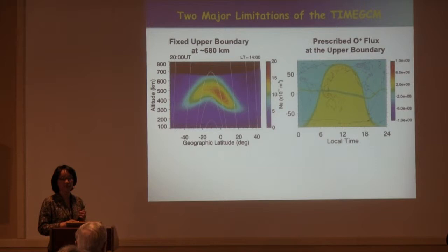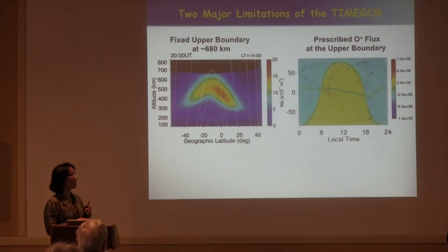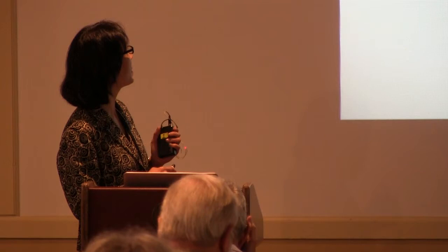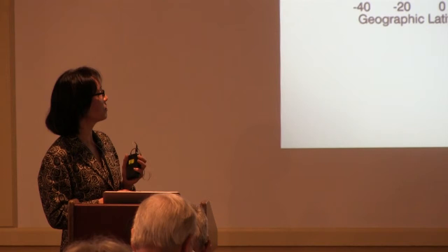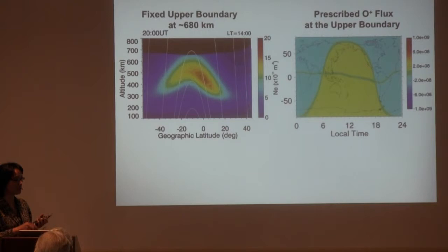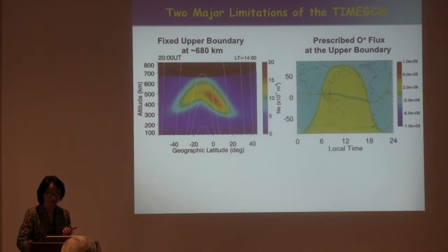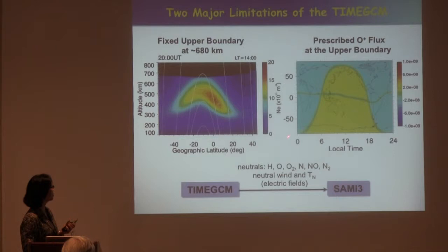Although TIEGCM is a very powerful and useful tool for understanding thermosphere dynamics, it has some intrinsic limitations. Two major limitations are: first, it has a fixed upper boundary at about 680–700 kilometers, and second, it utilizes a prescribed O+ flux, which prevents particles from freely crossing the upper boundary. During storm time, the upper atmosphere can fluctuate quite a bit. To eliminate those limitations, we have recently tried to couple TIEGCM with SAMI3, which is a global ionosphere model extending from about 90 kilometers to several Earth radii. Right now it is a one-way coupling.